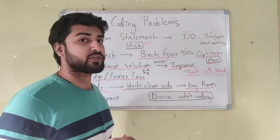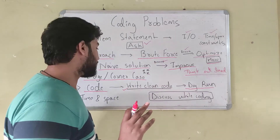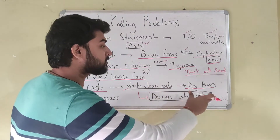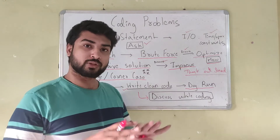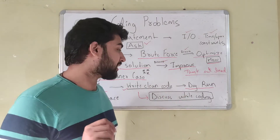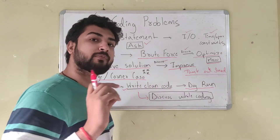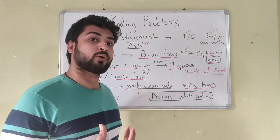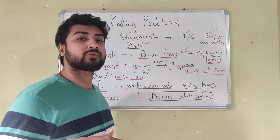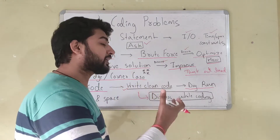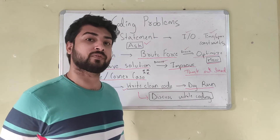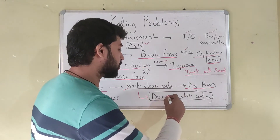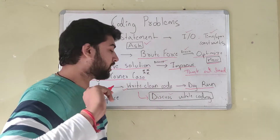Once you've done writing the code, try to dry run it on a few test cases to make sure you got everything right. Also, when writing the code, make sure to discuss while coding — don't stop talking to the interviewer. Whatever you're coding, tell the interviewer what each line of code is doing. If you're writing a for loop, tell the interviewer what the for loop is doing; if you're making a function, explain what it does.